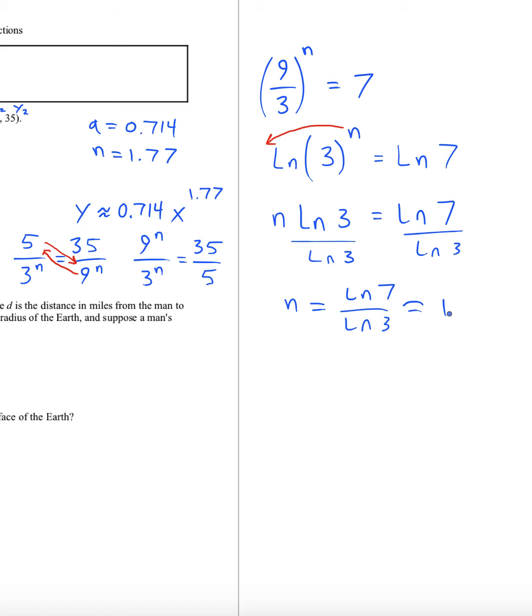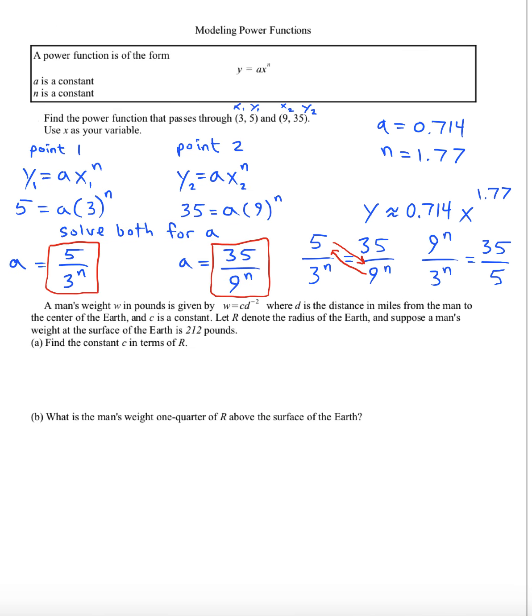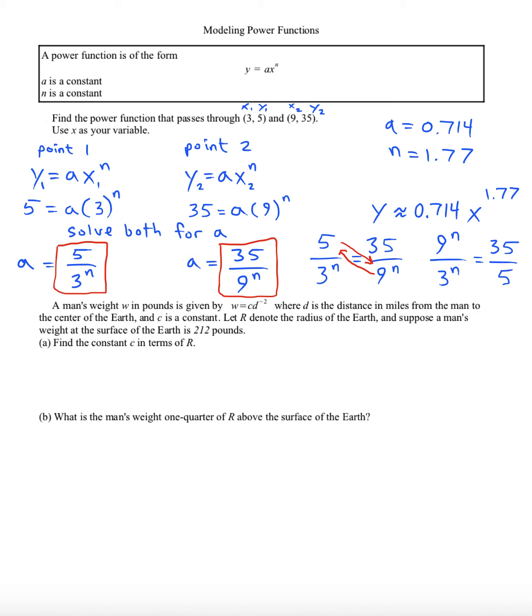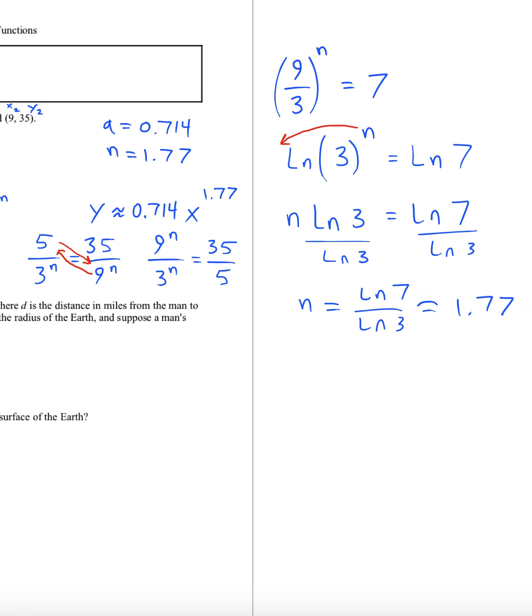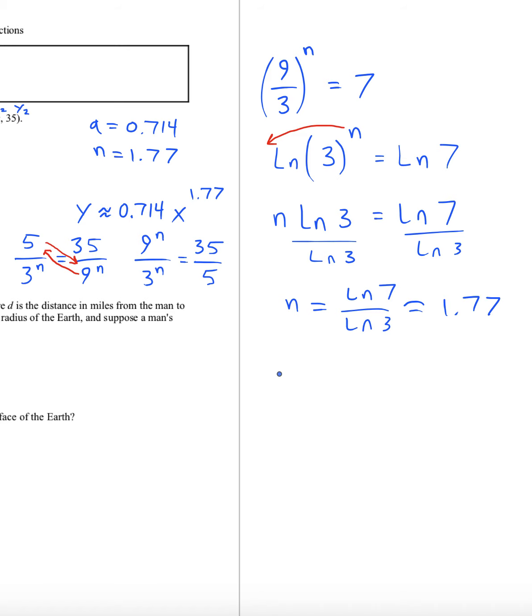It's approximately 1.77 just as we had found through desmos regression. We can't stop there though because we want to go back now and find a value for a. Since a is equal to five over three to the n, we can plug that in now that we know what n is. It's going to be five over three to the 1.77 approximately, which is 0.714.